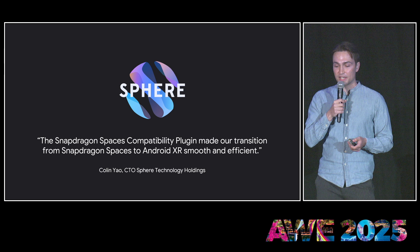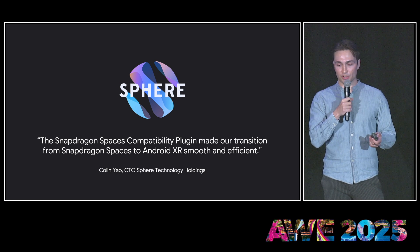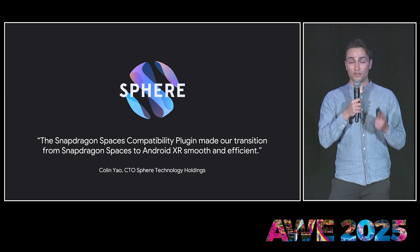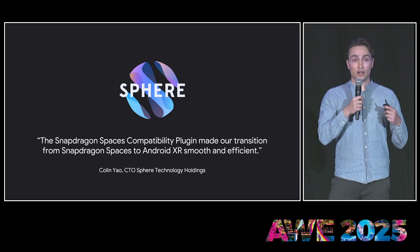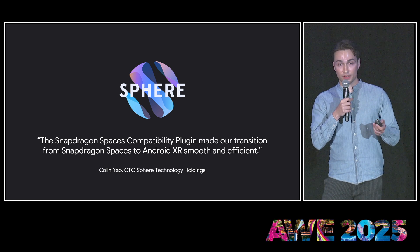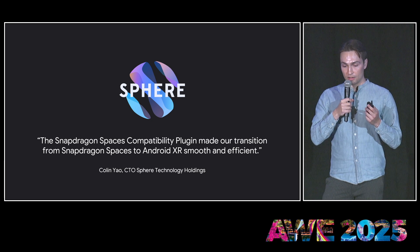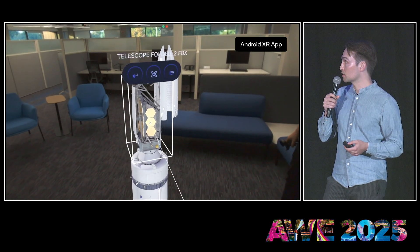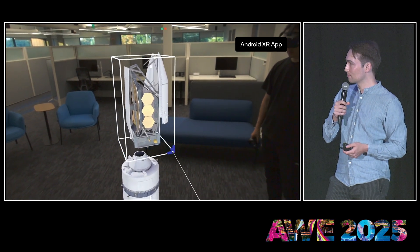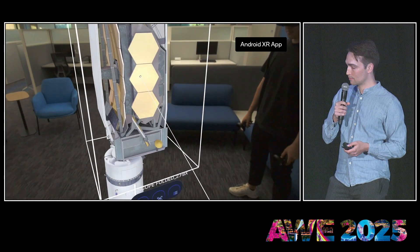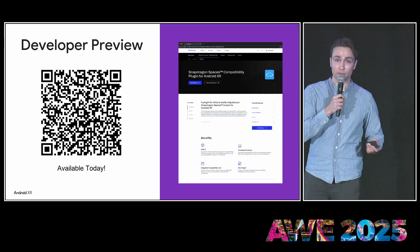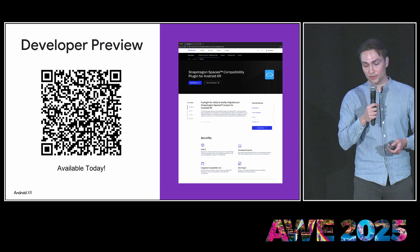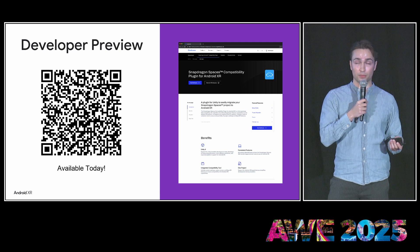We collaborated with one of the leading Spaces enterprise developers, Thier, to bring their former Snapdragon Spaces project to AndroidXR with the Spaces compatibility plugin. Using the plugin, they were able to migrate their app to AndroidXR without access to an AndroidXR device — just using their old Snapdragon Spaces project and a Spaces device from years ago. Here's a quick video: this is a collaborative session of Sphere running on Snapdragon Spaces and here on AndroidXR. So if you're a former Spaces developer, you can do the same — download the Snapdragon Spaces compatibility plugin from our Qualcomm developer portal.